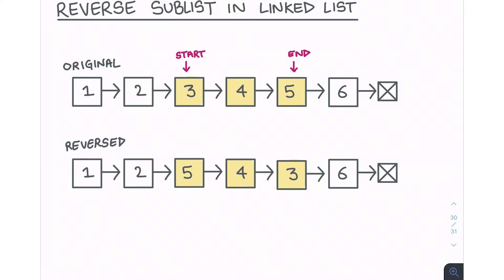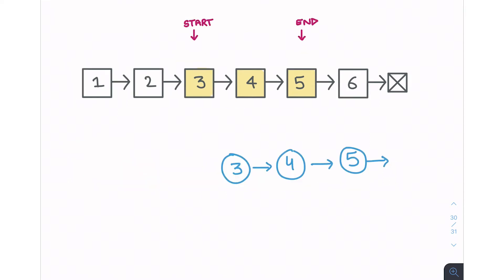So how will we do this? This is a three-pointer approach — you need to keep track of three pointers and iterate through the entire sublist. The logic is very simple: all you need to do is start off at the second element of the linked list, pick that up, extract it, and place it in the front.